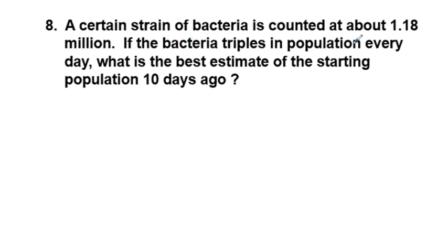A certain strain of bacteria is counted at about 1.18 million. So in this case we are given our final amount, which is going to be 1.18 million, 1,180,000, that is right. And that equals a sub 0, which we do not know, times what are we looking at here. Our base of our exponent is going to be 3 because of this word here, triple.